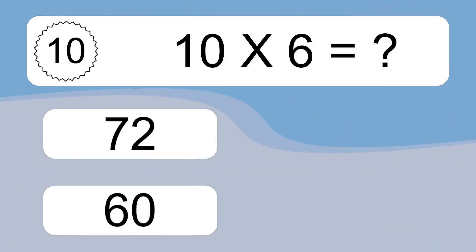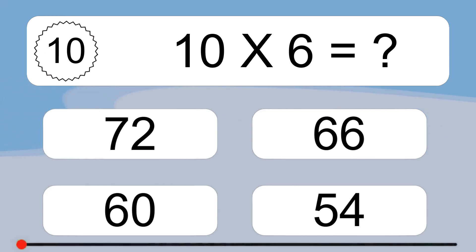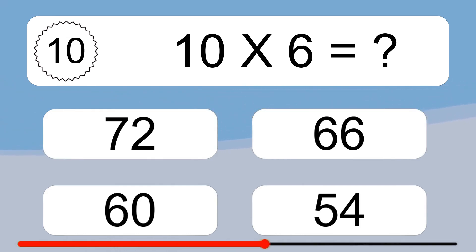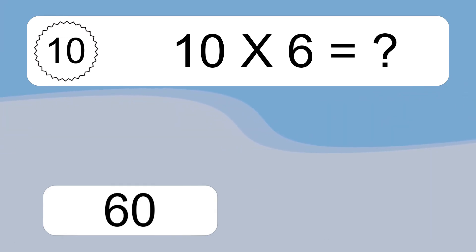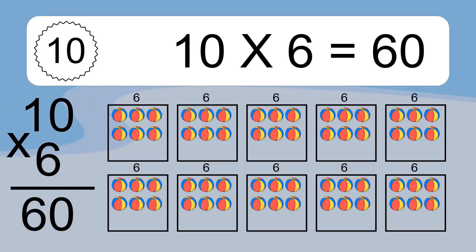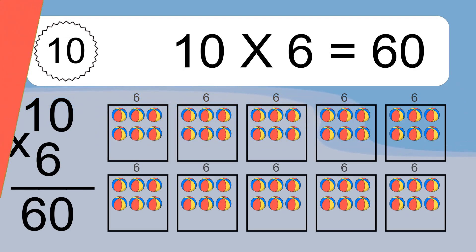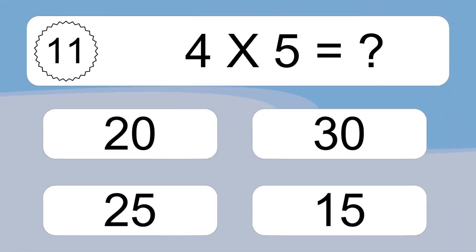10 times 6 equals what? 10 times 6 equals 60. We have 10 boxes, and each box has 6 colorful balls inside. If you count all the balls in all the boxes together, you will have 10 times 6 balls. This equals 60 balls.